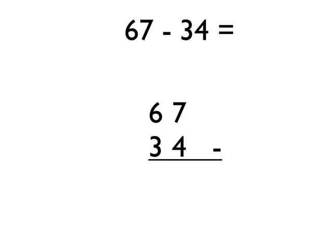The main thing you have to remember is that you have to line up the units digits, line up the tens digits, line up the hundreds digits and so on. As long as you lay it out like that you'll be absolutely fine. In this case the seven and the four, the units digits in each number, are lined up vertically above each other, and then the tens digits, the six and the three, are lined up.